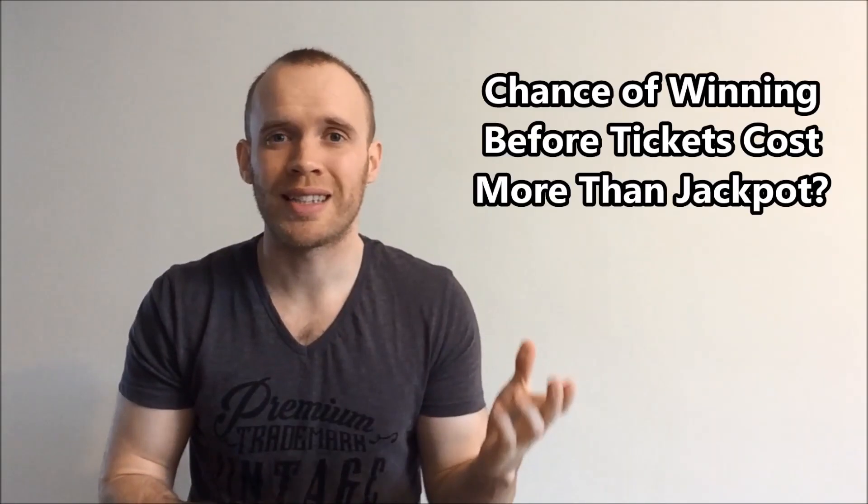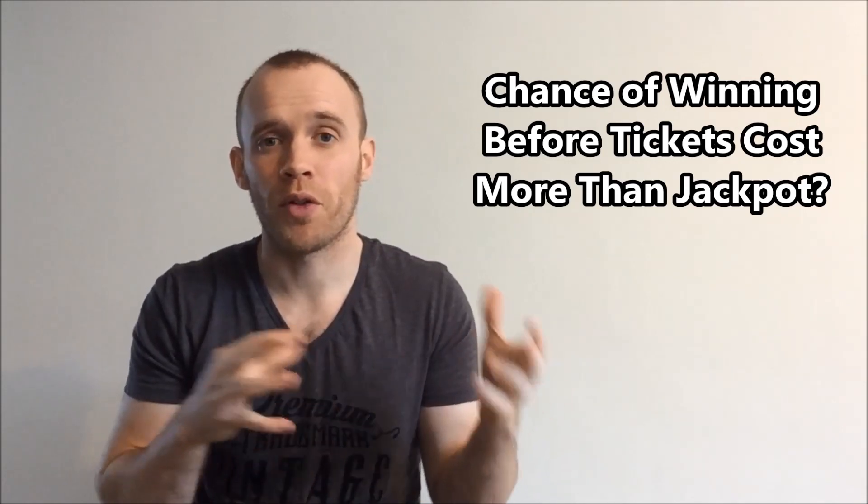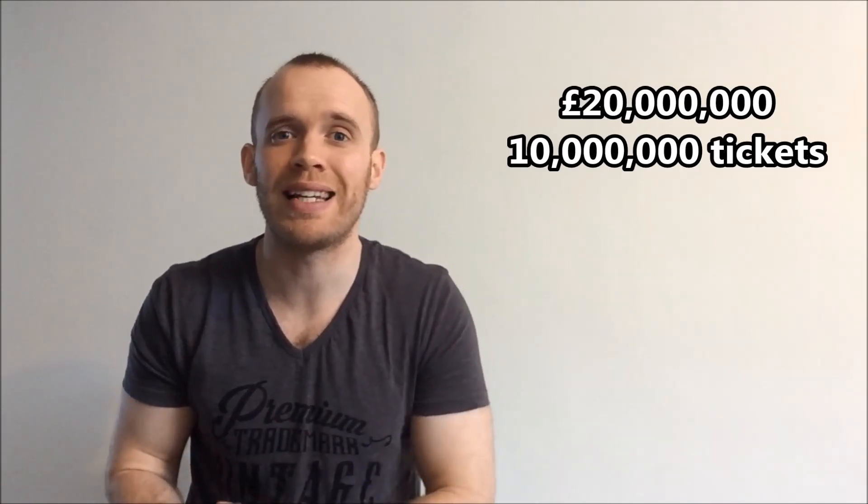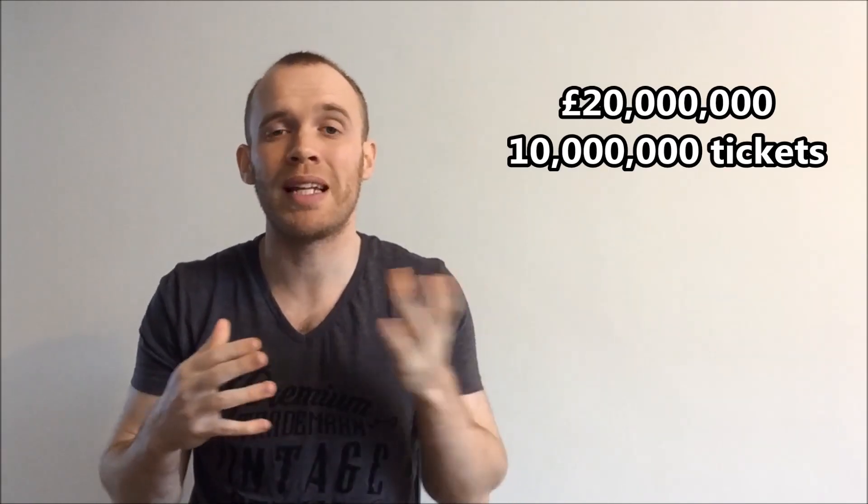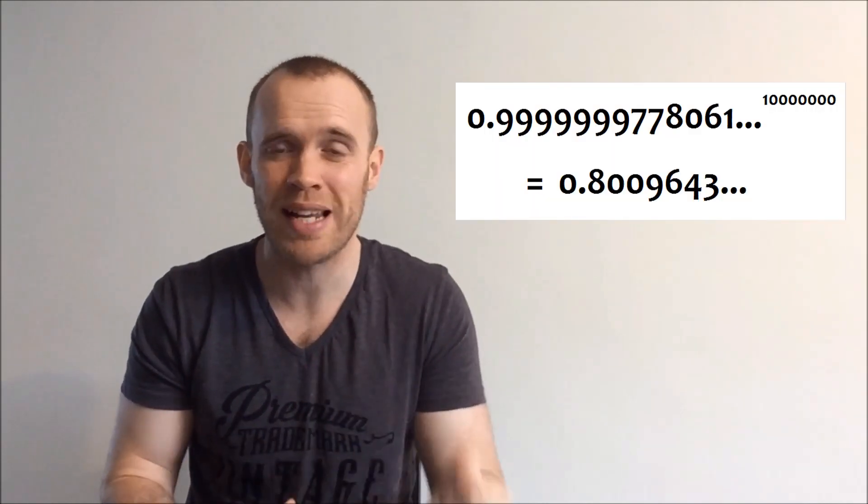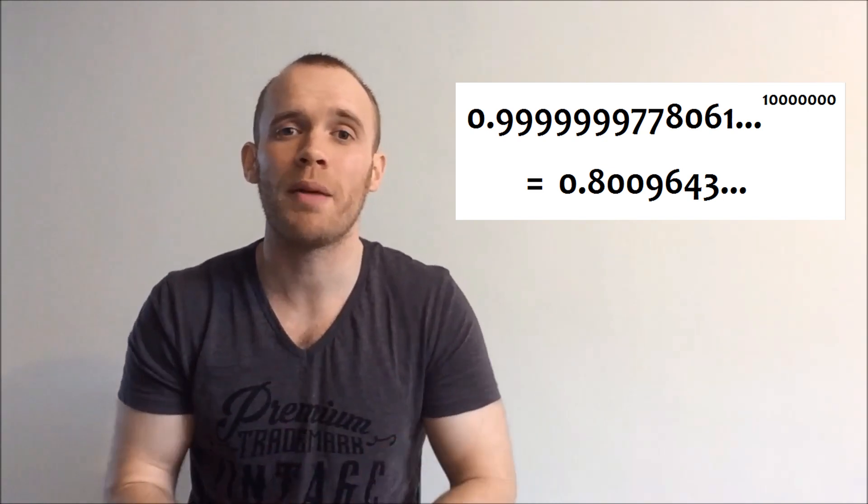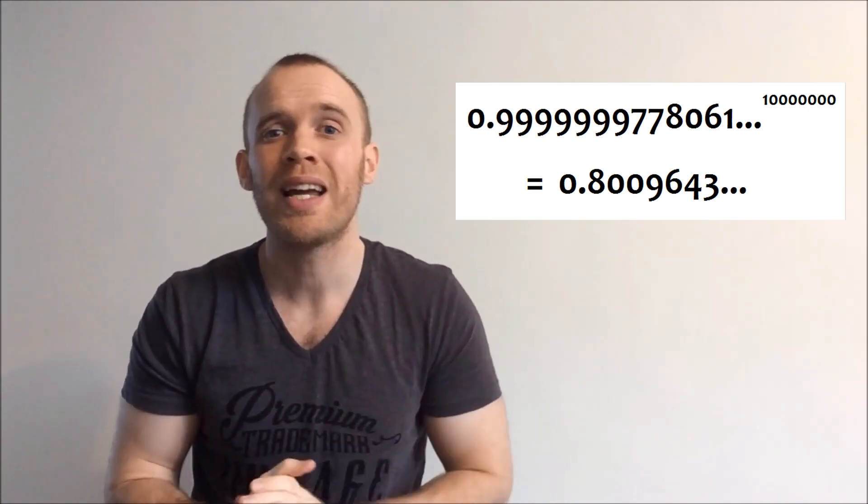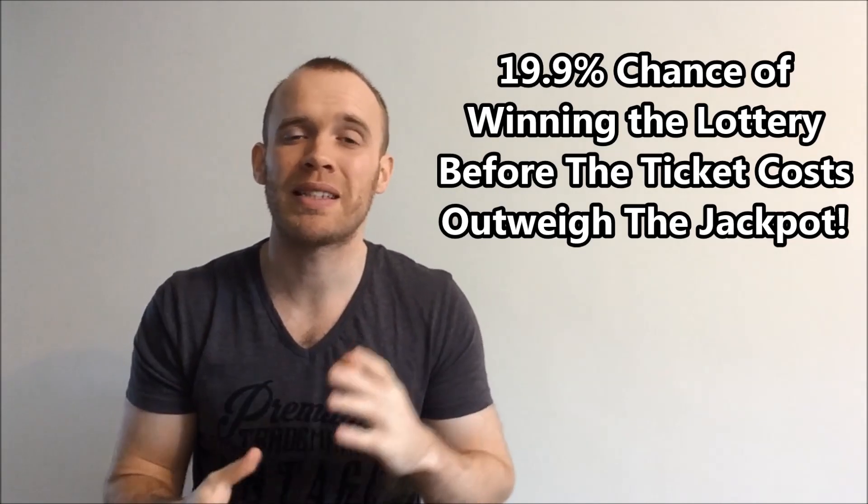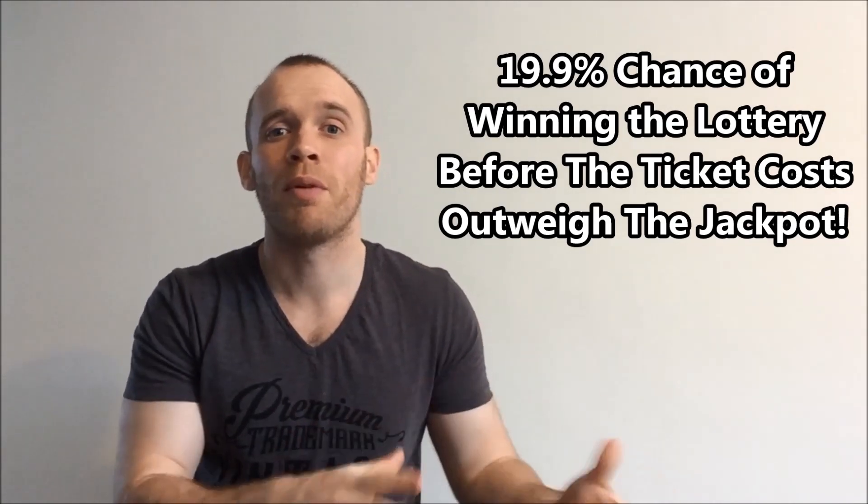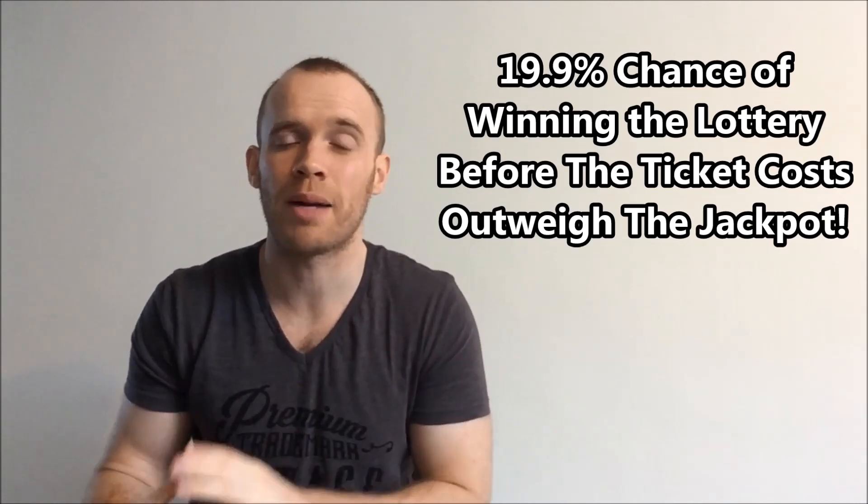So let's do one last one. What are your chances of winning the lottery before the cost of the tickets outweigh the jackpot itself? So if the jackpot's 20 million, that buys you 10 million tickets. I'm going to take the probability of not winning in the draw, multiply it by itself 10 million times, and that gets you 0.801. So an 80.1% chance of not winning, meaning a 19.9%, roughly one in five chance, that you're going to win the jackpot before the cost of the tickets outweigh the jackpot itself.